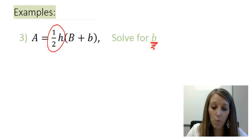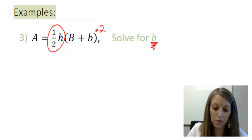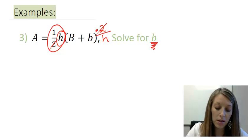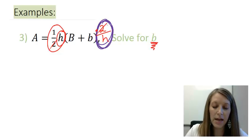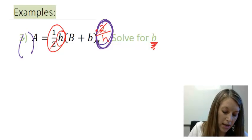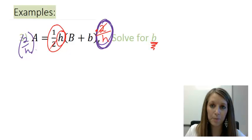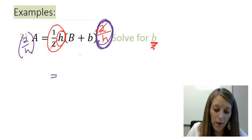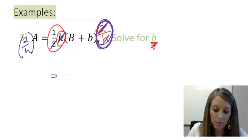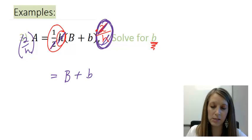So, to get rid of my one-half, I multiply by the reciprocal of 2 because 2 over 2 cancels out. And to get rid of my h, I divide by it. So, I would divide by h. Or, the condensed version is I can multiply both sides of my equation by 2 over h. So, if I do it on the right-hand side, I have to do it on the left-hand side. Again, on the right-hand side, 2 divided by 2 cancels out, and h divided by h cancels out, leaving me with capital B plus lowercase b.